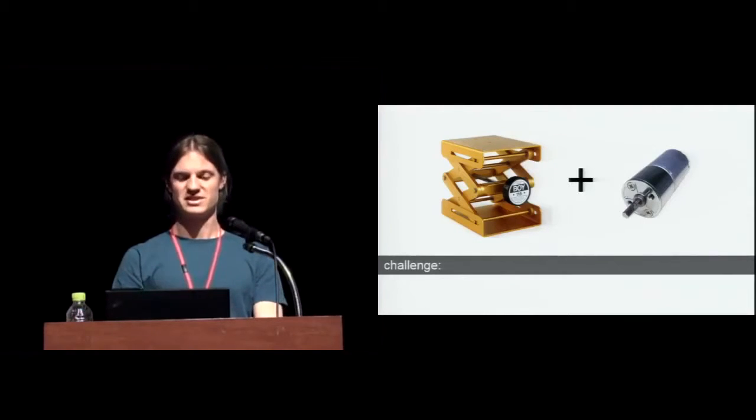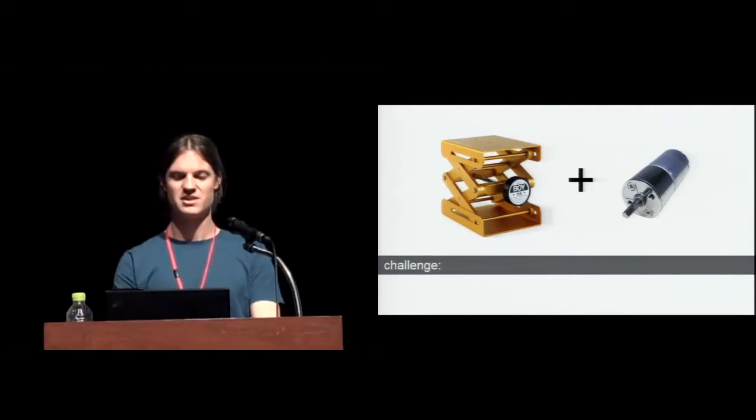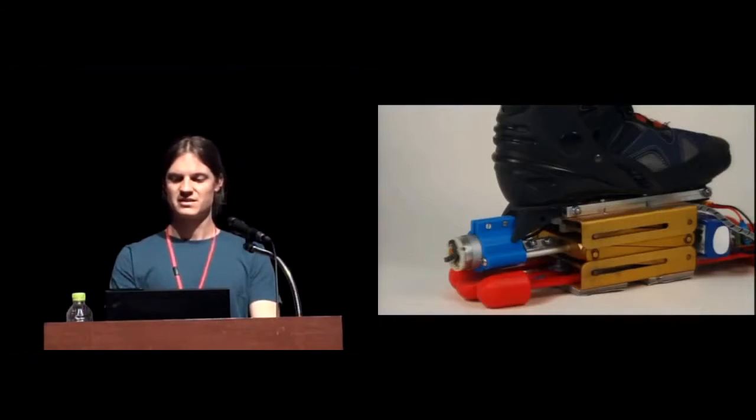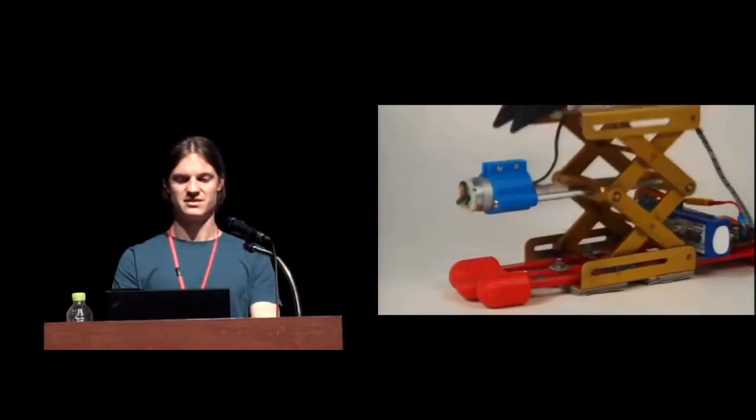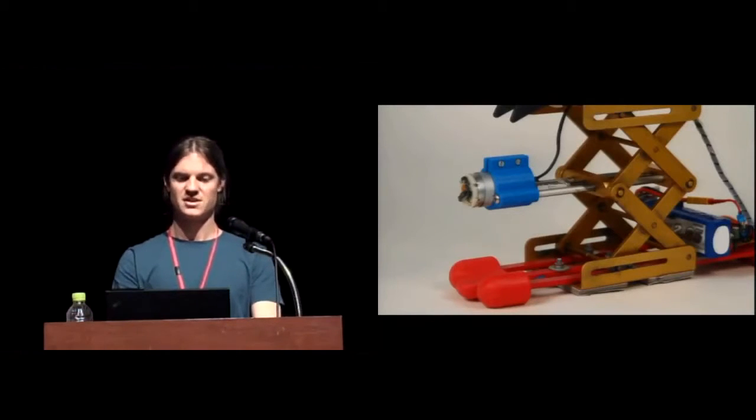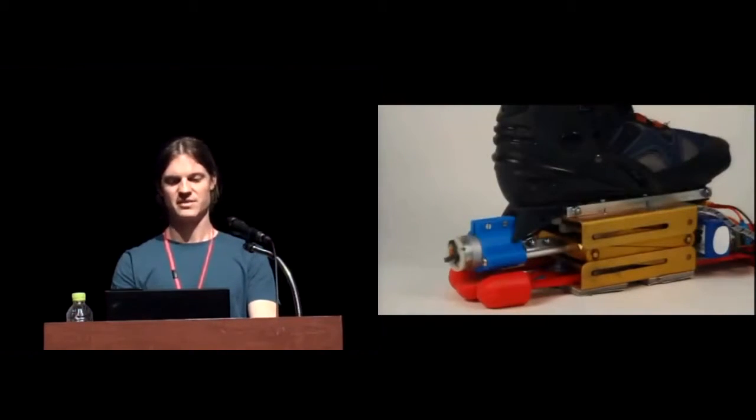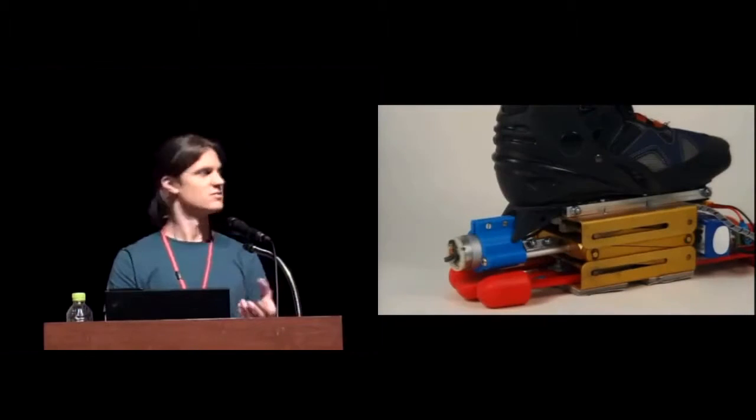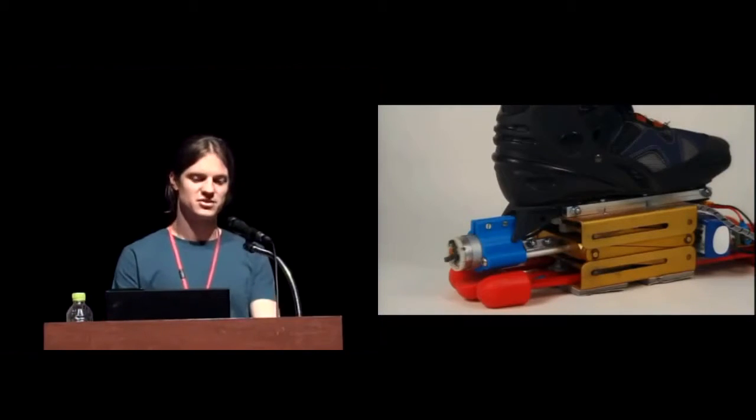So the primary component is the lift table, which is an off-the-shelf component, normally operated manually by this knob. So we needed to motorize it somehow. And that's why we made the blue carriage here, which holds the motor and drives the shaft. And at the same time, it prevents the motor from rotation left and right.